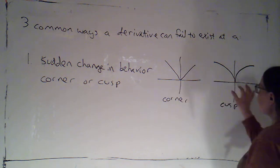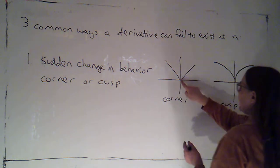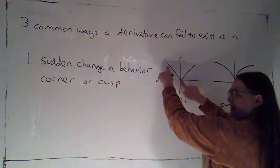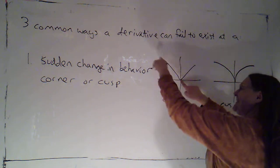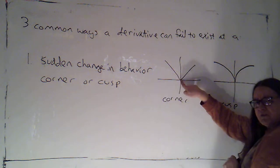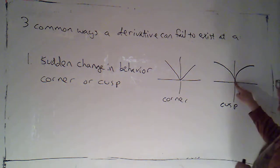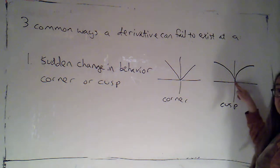Because if I were to try to take the limit of the slopes of secant lines, at this point, I can see if I choose a point coming in from the left, I'm getting negative slopes. If I choose a point from the right, I'm getting positive slopes. And they're not leveling off, so they're not going to meet in the middle at zero. Same thing's happening over here with this cusp.